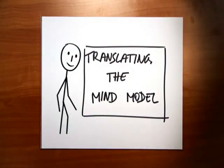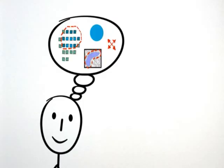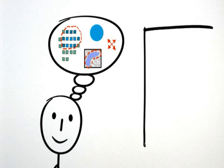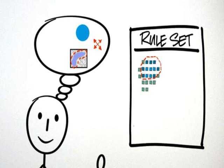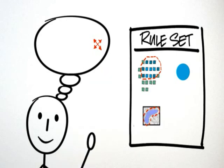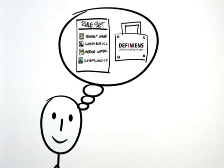This mind model you've built in a split second while looking at an image needs to be translated into something a computer can understand. Definiens Developer translates the mind model into a computer-readable rule set. Pixels need to be grouped into objects by adding a segmentation algorithm to the process. A classification algorithm assigns all objects with a defined blueness to the class water. Another segmentation algorithm merges all objects classed as water. A final classification algorithm assigns all objects above a defined length-to-width ratio to the class river.